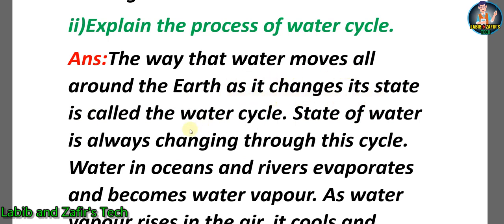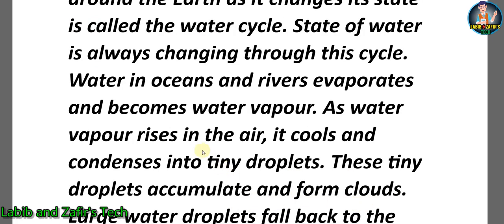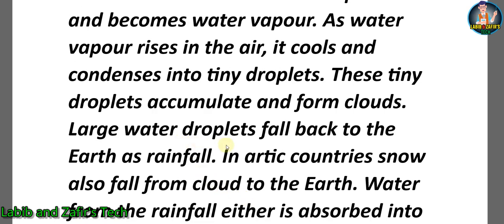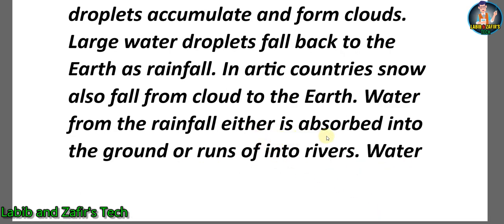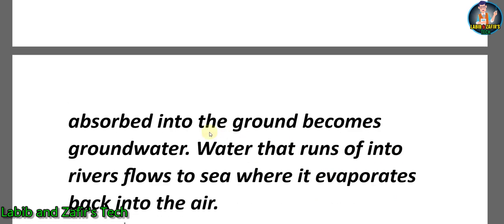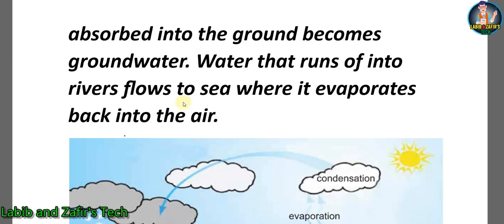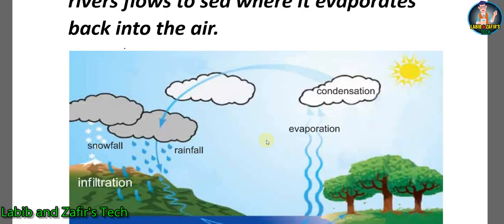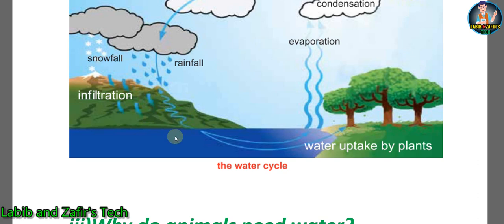Second descriptive question: Explain the process of the water cycle. Answer: The way that water moves all along the earth as it changes state is called the water cycle. Water in oceans and rivers evaporates and becomes water vapor. As water vapor rises in the air, it cools and condenses into tiny droplets. These droplets accumulate and form clouds. Large water droplets fall back to the earth as rainfall. In arctic countries, snow also falls from clouds. Rainfall is either absorbed into the ground, becoming groundwater, or runs off into rivers and flows to the sea, where it evaporates back into the air.